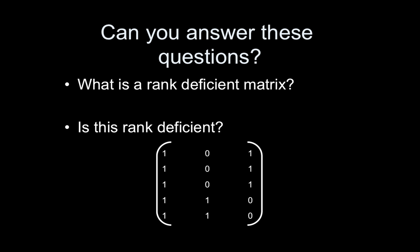But here's an example. Is this matrix rank-deficient? Can you tell by looking at it? Can you reproduce any one column by taking linear combinations of the other columns? I think so.